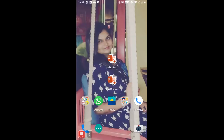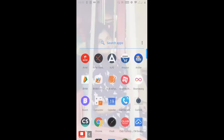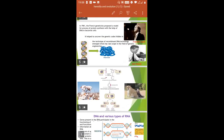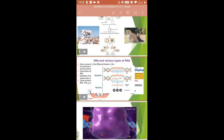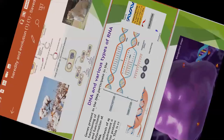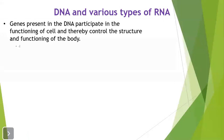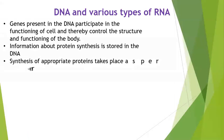Today we are going to study translation, which is very important. DNA produces different types of RNA — mRNA, rRNA, and tRNA. These are the three types of RNA present in the cell, and all three together help in the process of translation, that is protein synthesis.